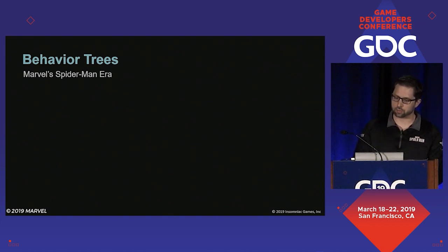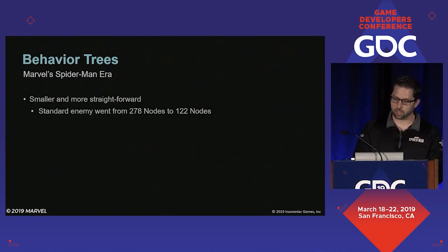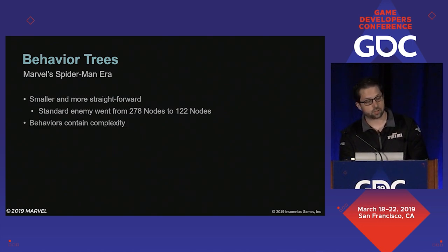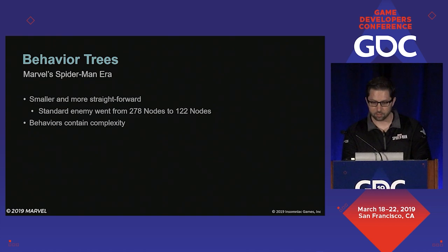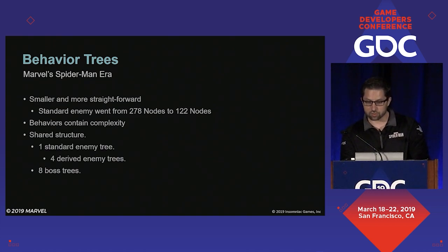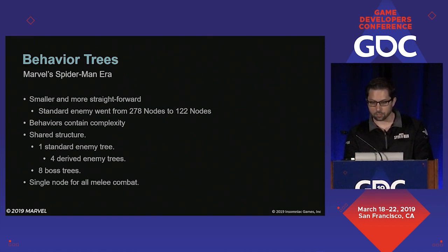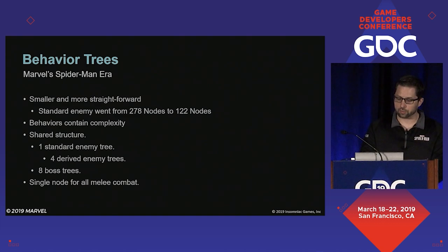We gradually started moving towards trees that were smaller and more straightforward, with behaviors that contained a lot of the complexity and logic that was previously entangled in the callback functions. This meant that we could share structure and behaviors. Nearly all of our standard enemies use exactly the same behavior tree and set of behaviors. As a quick example, we have a single node in our behavior tree that handles all of melee combat.